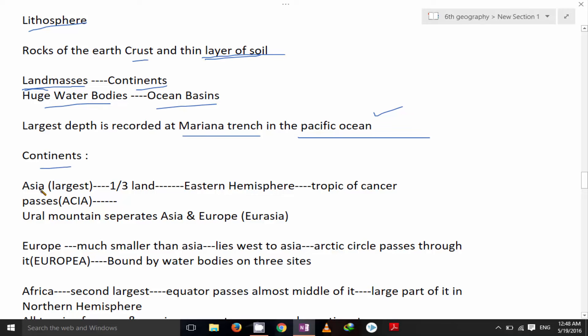Continents. Asia is the largest continent. It covers one third of the land of the earth. It lies in eastern hemisphere. The tropic of cancer passes through it. That's why I consider it as Asia C for C, that is cancer, tropic of cancer. Ural mountains separated Asia and Europe. If Asia and Europe we want to call it together it will be Eurasia.